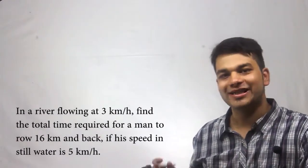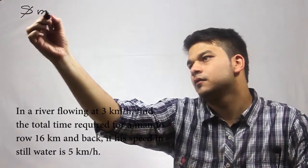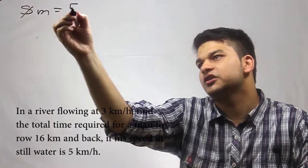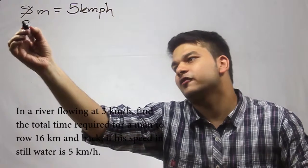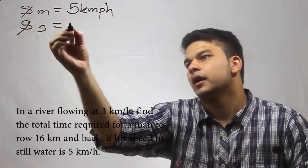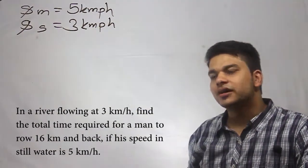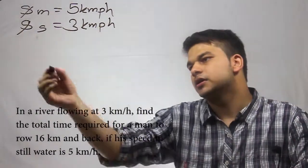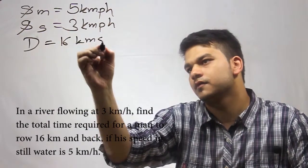In this problem, we have the speed of a man in still water is 5 kilometers per hour and that of the stream is 3 kilometers per hour. The distance between two points is 16 kilometers, and we have been asked the total time required for a man to go upstream and then come back downstream.